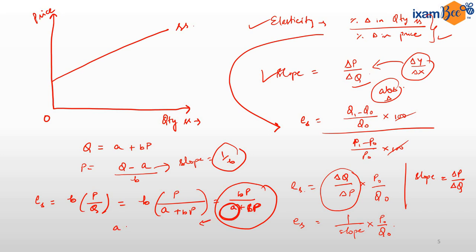If A is less than 0, the y-intercept, which equals −A/B, will be a positive value. A positive y-intercept means the supply curve cuts the y-axis above the origin. From the elasticity equation BP/(A + BP), when A is negative the denominator is less than the numerator, so the elasticity of supply will be greater than 1.